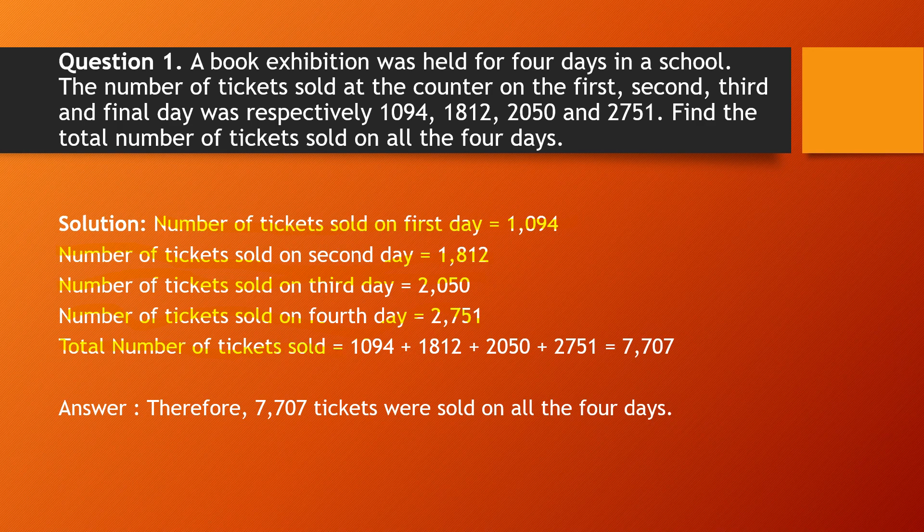So 1094 + 1812 + 2050 + 2751 sums up to 7707. Therefore, 7707 tickets were sold on all four days.